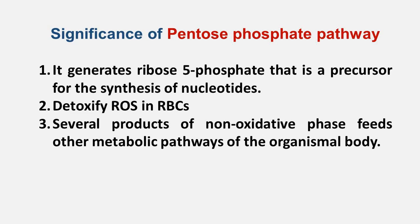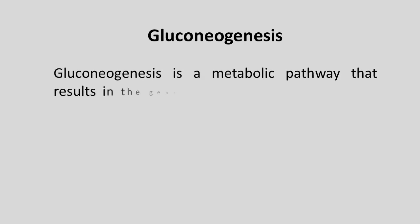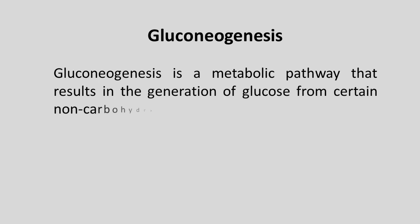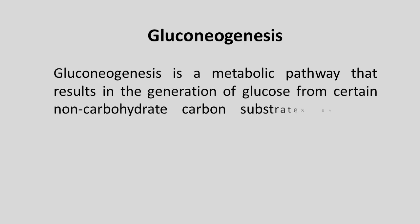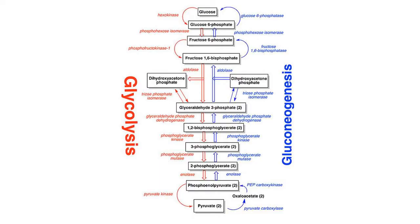Let us now discuss the other alternative metabolic pathway, gluconeogenesis. By definition, gluconeogenesis is the metabolic pathway that results in the generation of glucose from certain non-carbohydrate substrates. Gluconeogenesis is much like glycolysis — only the process occurs in reverse. However, there are exceptions.